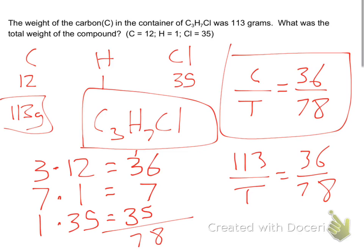Cross multiply. 113 times 78 equals 36T. Divide both sides by 36. What is that? You guys might want to use a calculator. 244.8 grams. Grams total weight. You have 244.8 grams for a total weight.